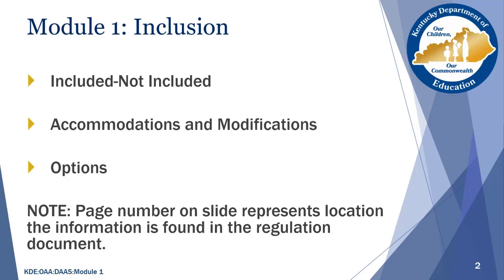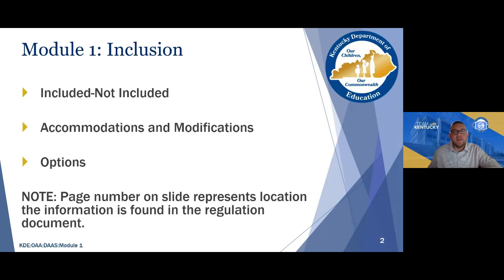Welcome to Module 1 of the Inclusion of Special Populations Regulation 703-KAR-5-070. Module 1 will focus on inclusion specifically, as well as who is included and who is not included. We will also look at the difference between an accommodation and a modification and how they differ when it comes to state assessments. The last thing Module 1 will emphasize is the three options when it comes to state assessments.